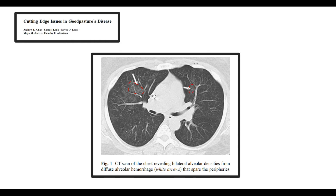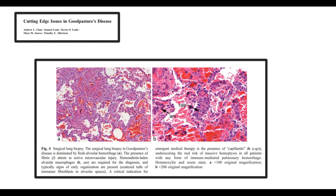On histological samples from patients with Goodpasture syndrome, we can see deposition of fibrin molecules. Fibrin deposits usually form in response to inflammation as a protective mechanism. We can also see macrophages full of hemosiderin — called hemosiderin-laden macrophages. Hemosiderin forms due to oxidation of iron, and massive release of iron into tissues occurs due to hemorrhage. So macrophages full of hemosiderin are a sign of hemorrhage, and hemorrhages due to basement membrane injury are the signature feature of Goodpasture syndrome.